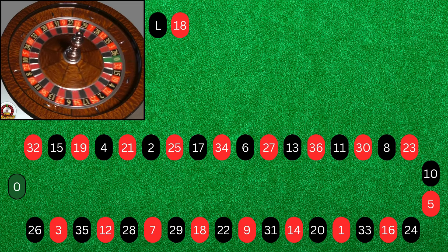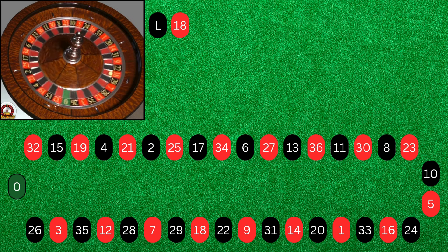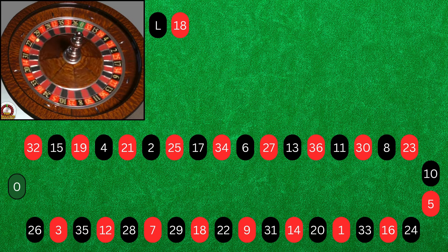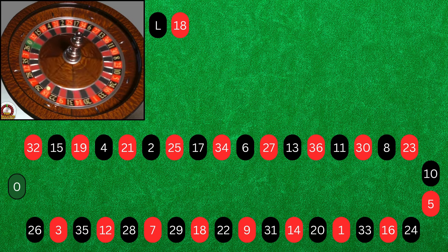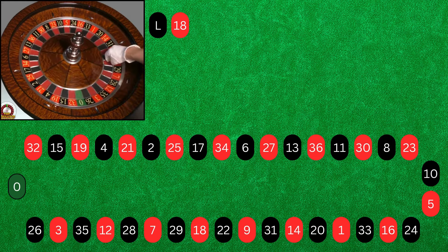This is PreRoulettePlayer. Welcome to the channel. We're looking at a method of signature spins, counting the number of pockets from the starting number, whether it's a left or a right spin.